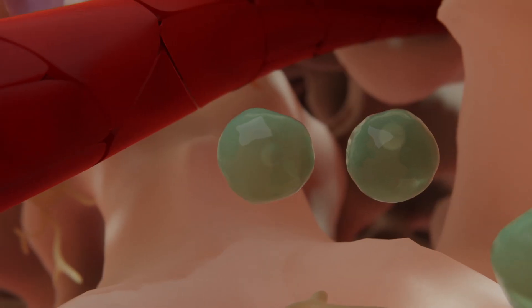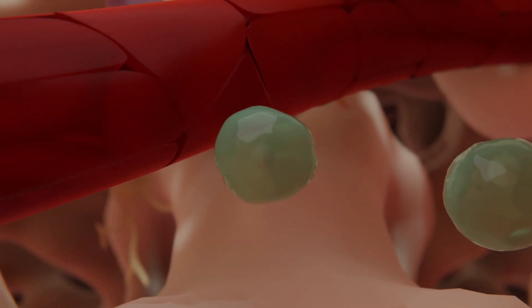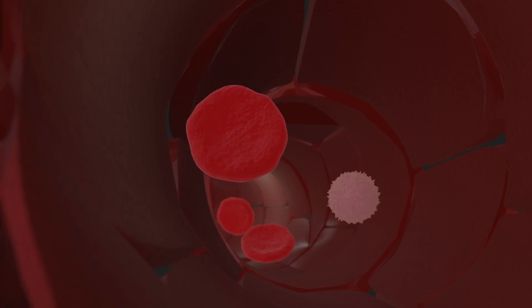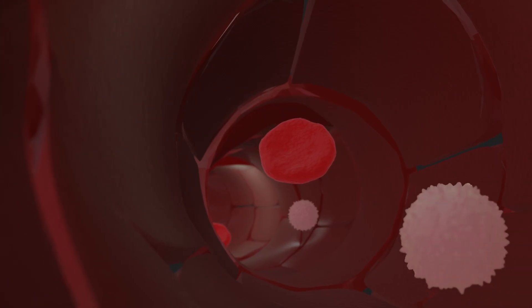If this is too low, the kidneys release erythropoietin, which stimulates the production of red blood cells. The blood can then absorb more oxygen and transport it throughout the body.